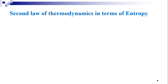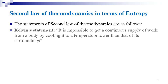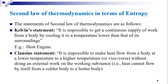Now let us look into the statements of the second law of thermodynamics. There are two statements given by Kelvin and Clausius. Kelvin's statement is: it is impossible to get a continuous supply of work from a body by cooling it to a temperature lower than that of its surroundings. The example for this is the heat engine.